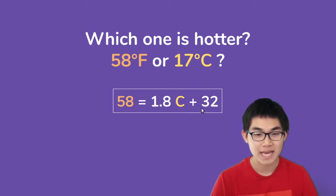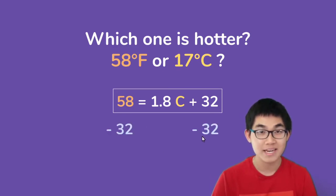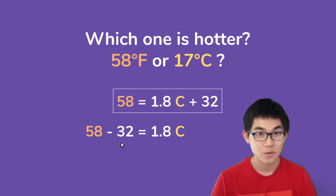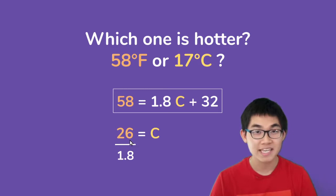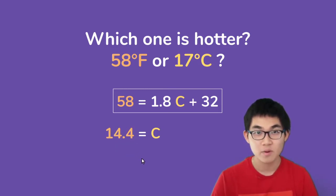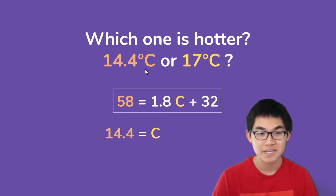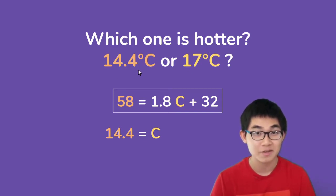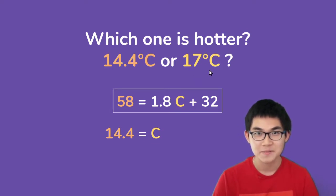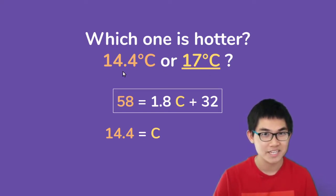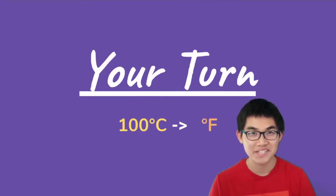The first thing I'm going to do is subtract both sides by 32, so 32 minus 32 cancels out. Over here we have 58 minus 32, which is 26. The last step is to divide both sides by 1.8, and 26 divided by 1.8 is going to be 14.4 degrees Celsius. So 58 degrees Fahrenheit is the same thing as 14.4 degrees Celsius. Which one is hotter: 14.4 degrees Celsius or 17 degrees Celsius? Obviously 17 degrees Celsius is hotter than 14.4 degrees Celsius.